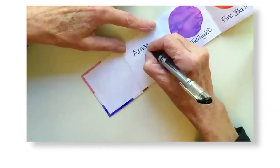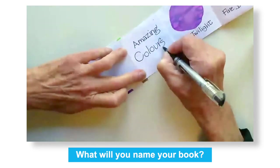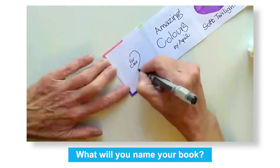Now to name my book. I'm going to call it Amazing Colors by April and I think I'll dedicate it to my cat, Cleo.